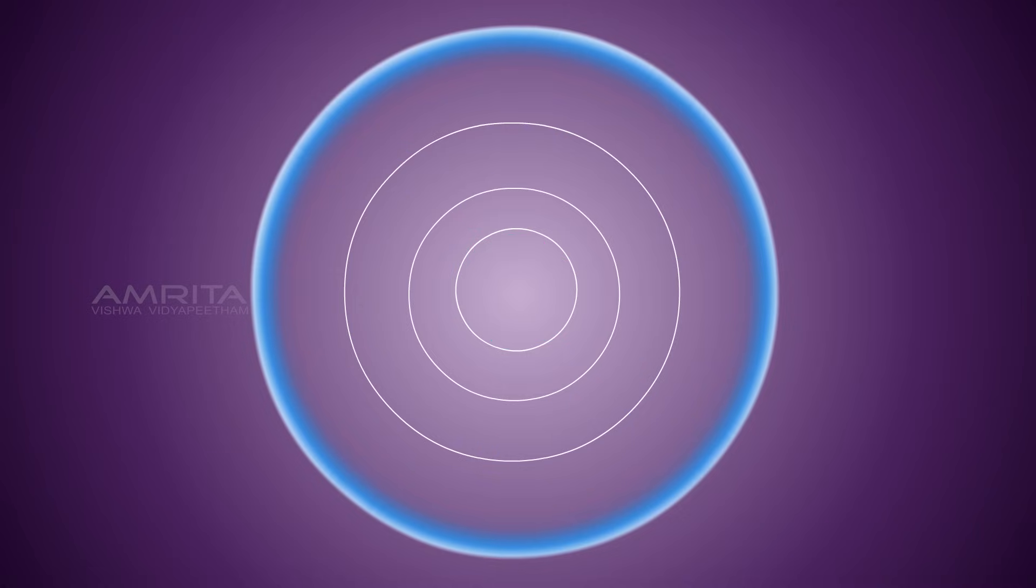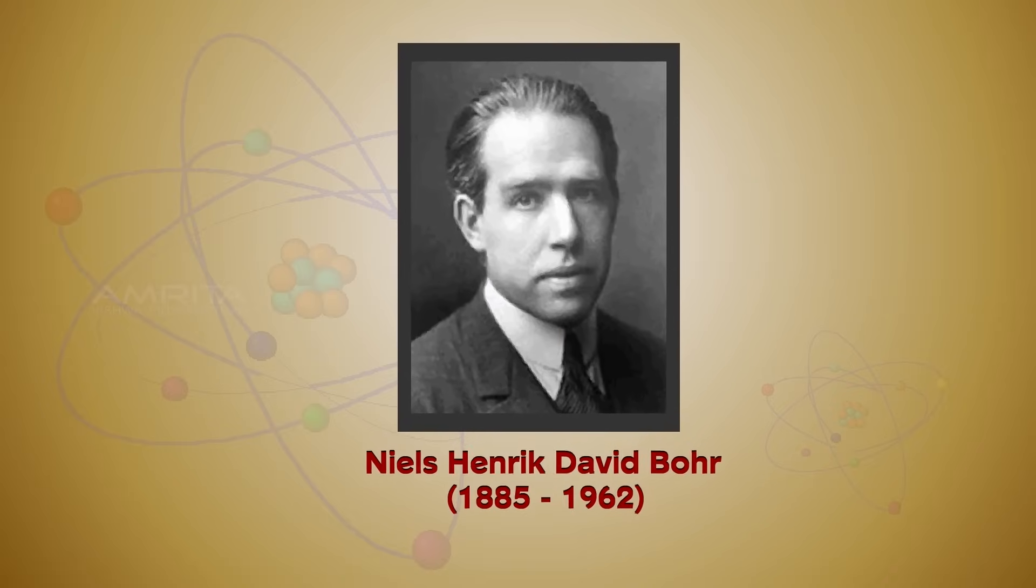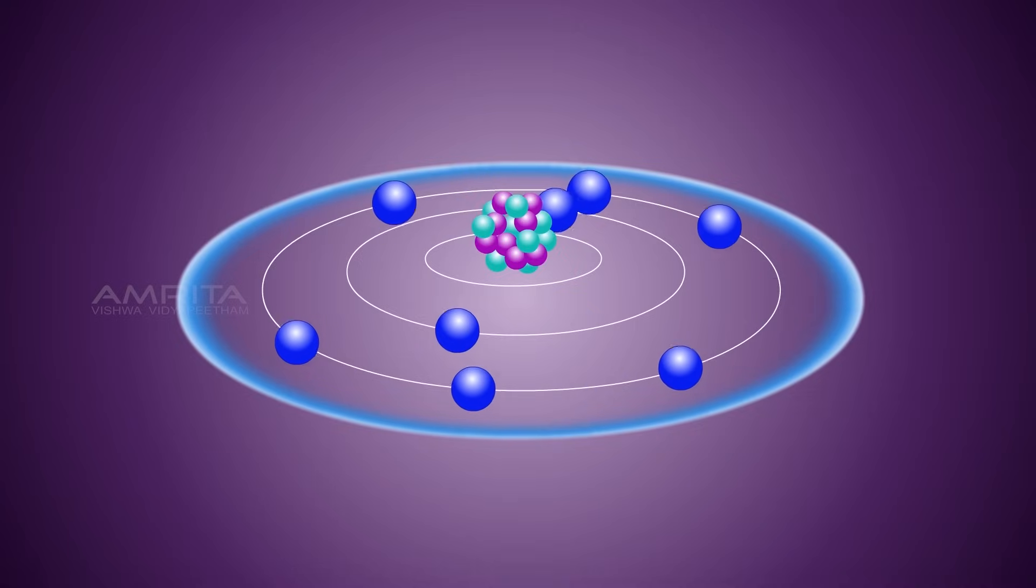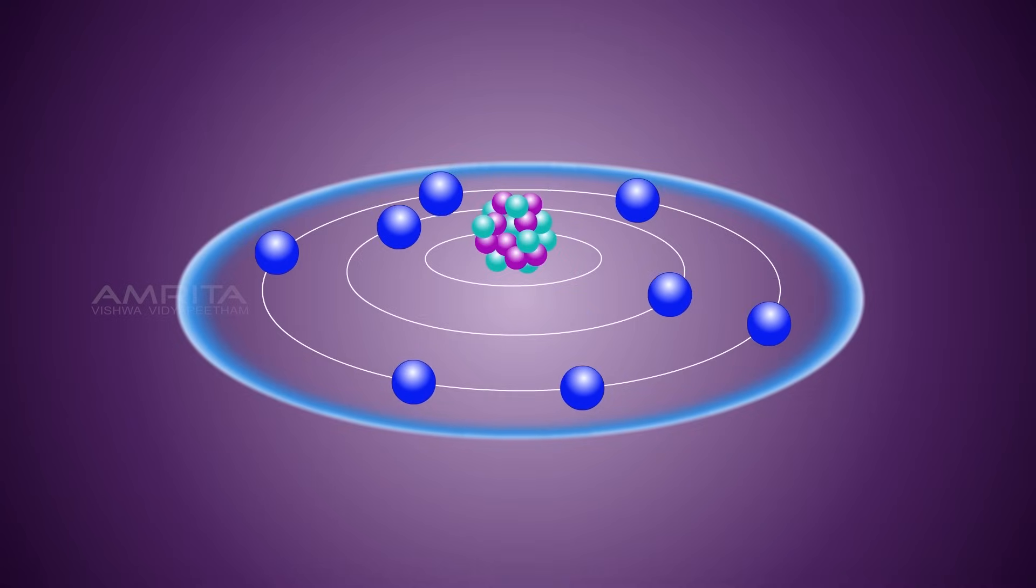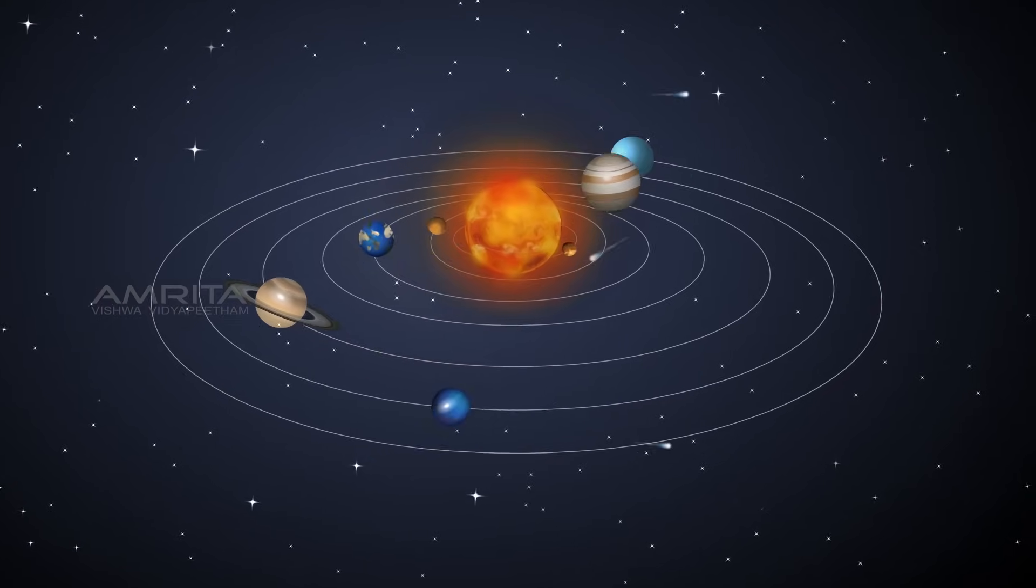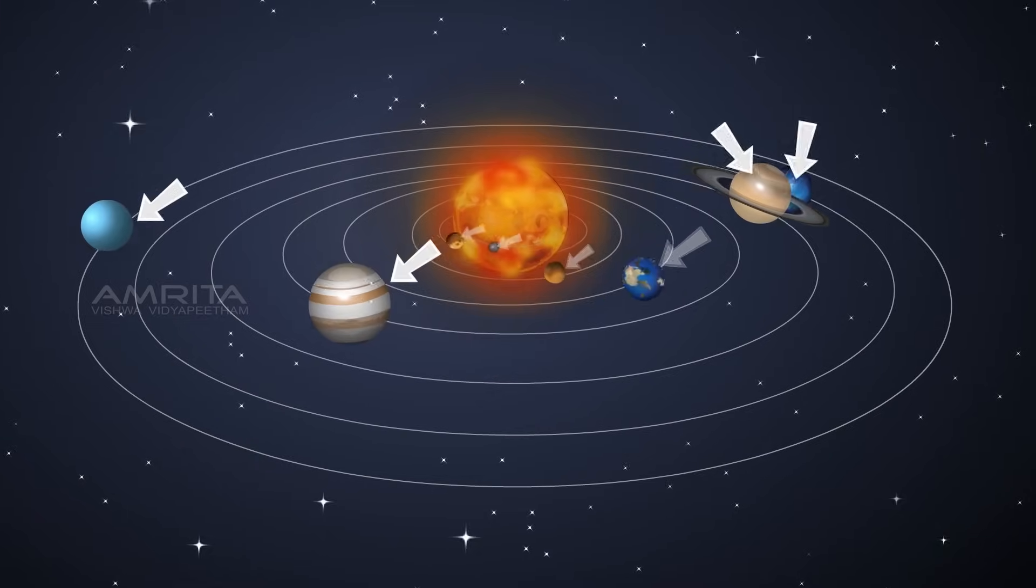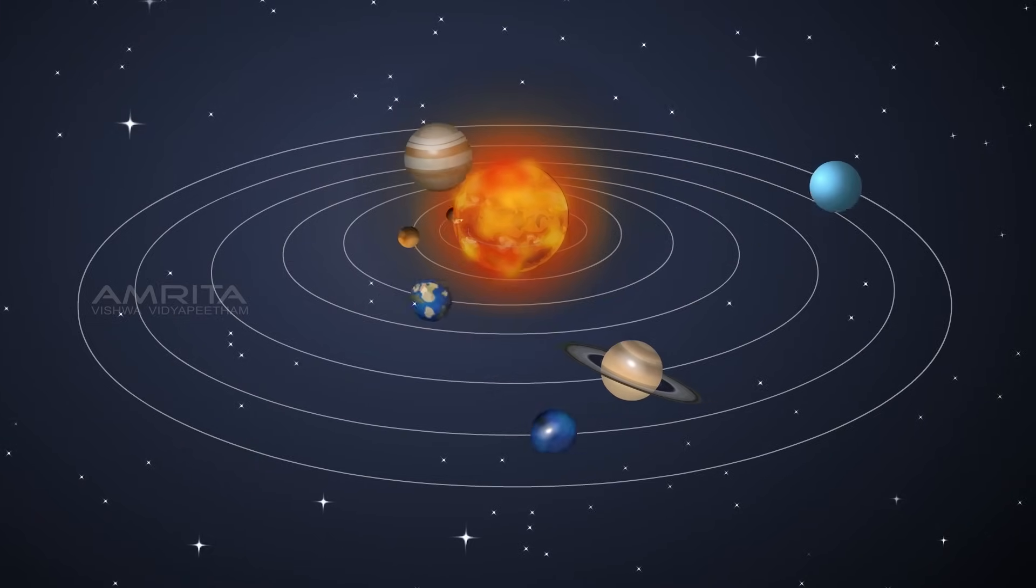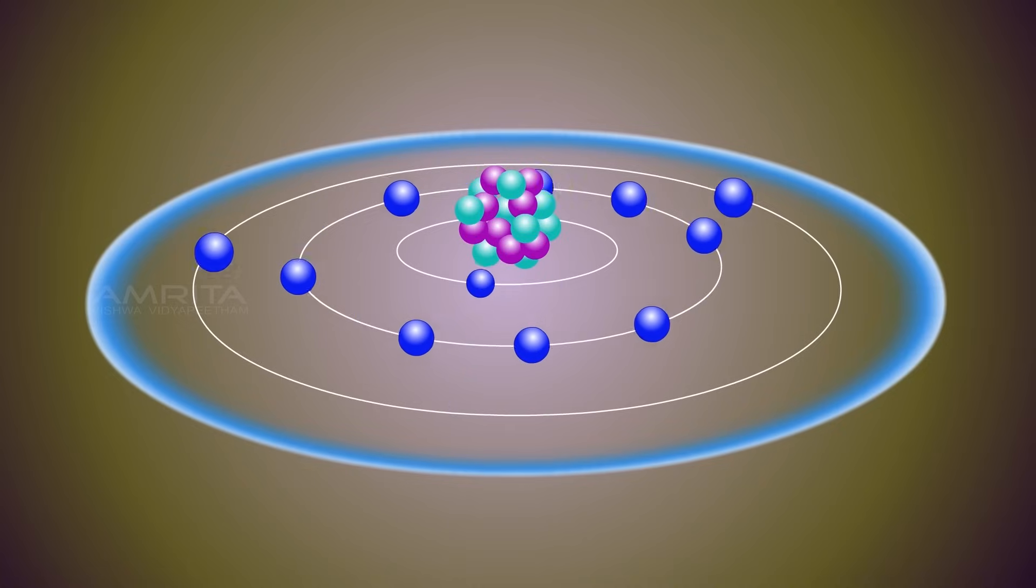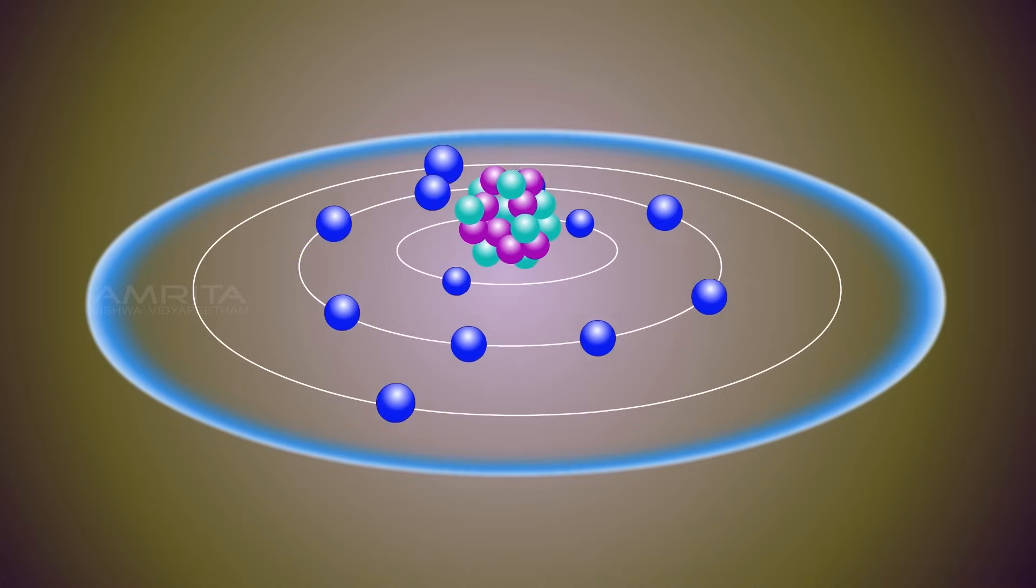Electrons are distributed in a definite path around the nucleus and are called shells or orbits. This concept was introduced by Niels Bohr. According to Bohr, different electrons revolve around the nucleus in their own different orbits. The atom has been compared to the solar system. In an atom, the nucleus is the sun and the electrons are the planets. Just like planets in the solar system, each electron revolves around the nucleus in its own different orbit.